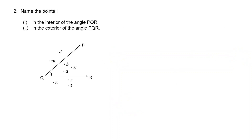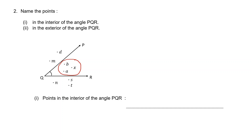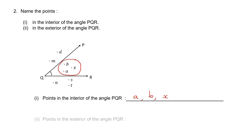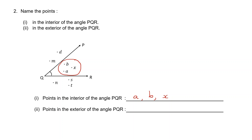Question 2. Look at the figure — you can see angle PQR. You can see some points inside the angle, within the angle. These are the points that are in the interior of the angle, and all the other points are outside the angle. The points in the interior of angle PQR are A, B, and X. The points in the exterior are D, M, N, S, and T.